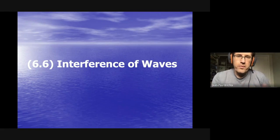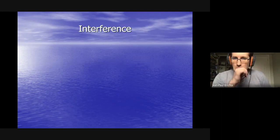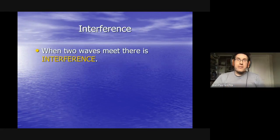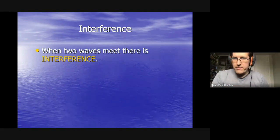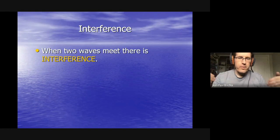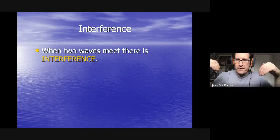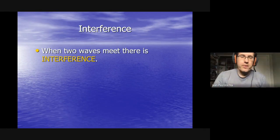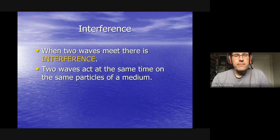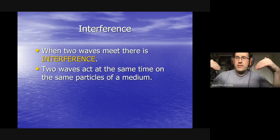Interference of waves is another new word. Interference is basically when two waves meet. So far we've only been talking about one wave; now we're interested in what happens when two waves — one moving this way and one moving that way — meet each other.